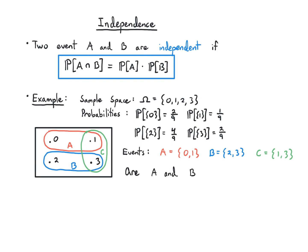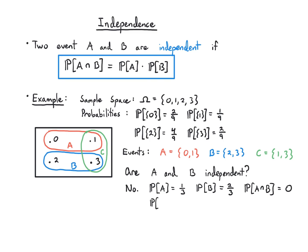The answer is no. We check the definition: P(A) = 1/3 (sum of 2/9 and 1/9), P(B) = 2/3 (sum of 4/9 and 2/9), and P(A∩B) = 0 because they share nothing in common. Therefore the probability of the intersection is not equal to the product of the probabilities. They are not independent — they are mutually exclusive because they don't overlap.